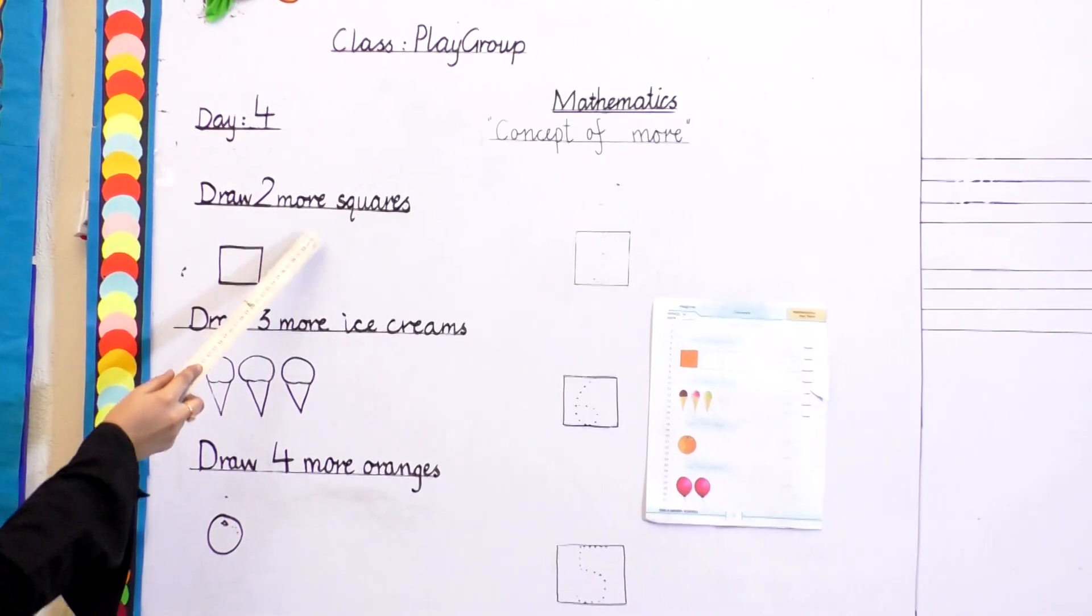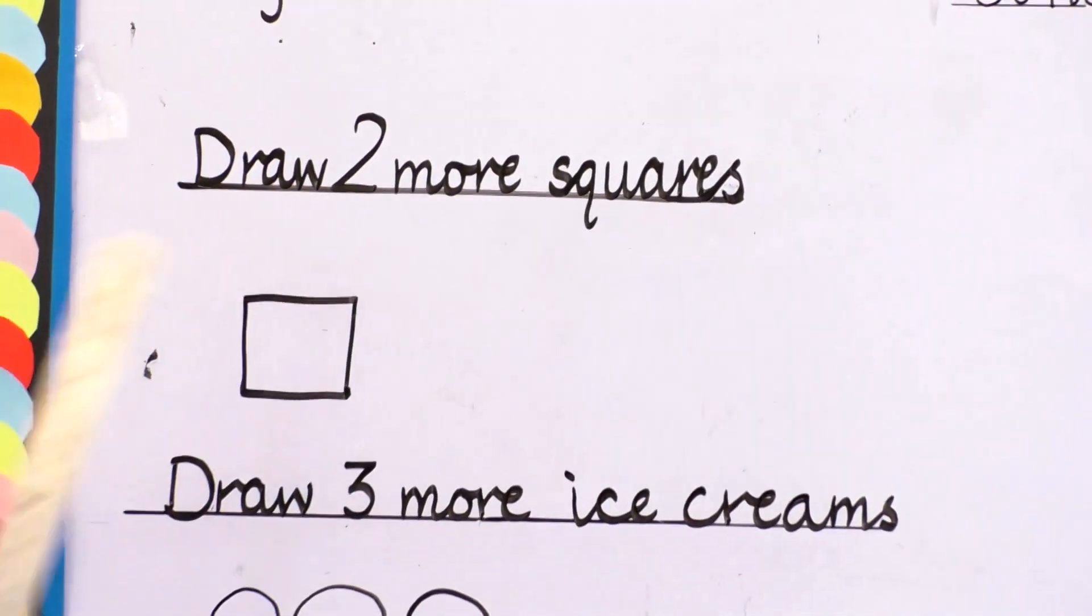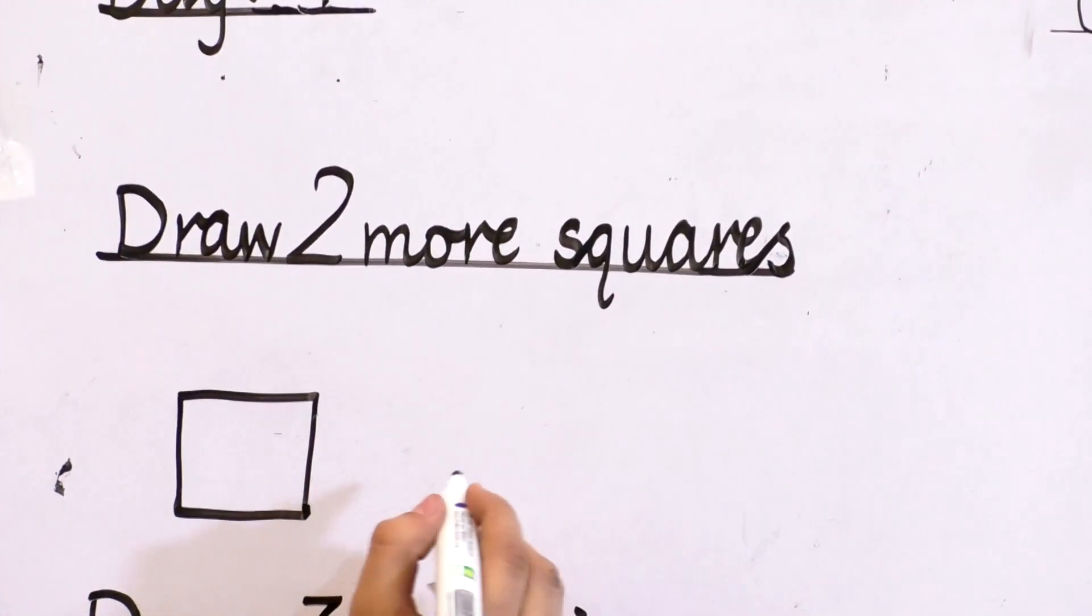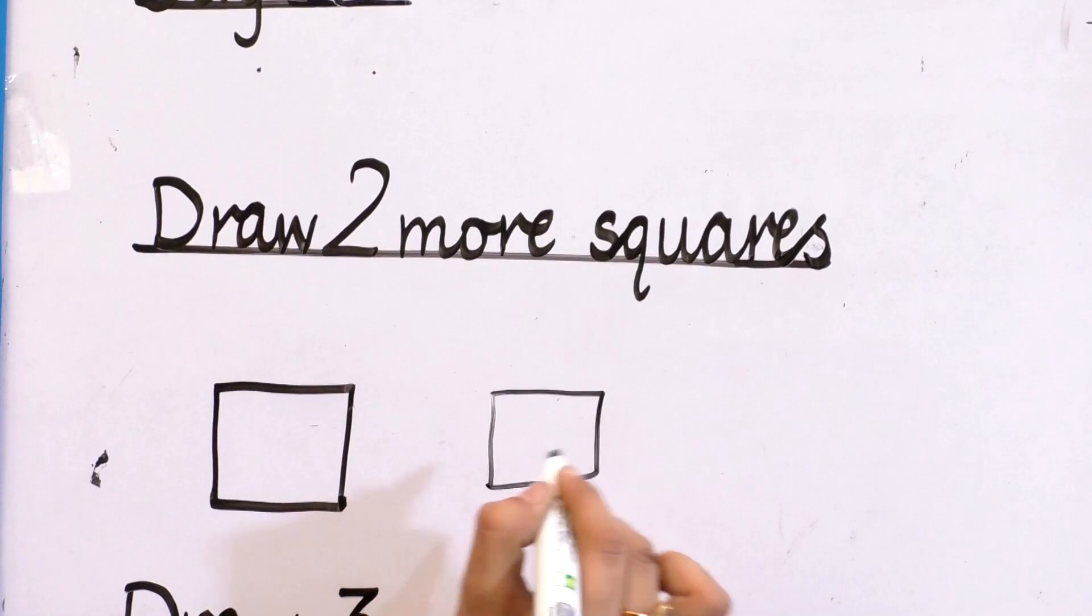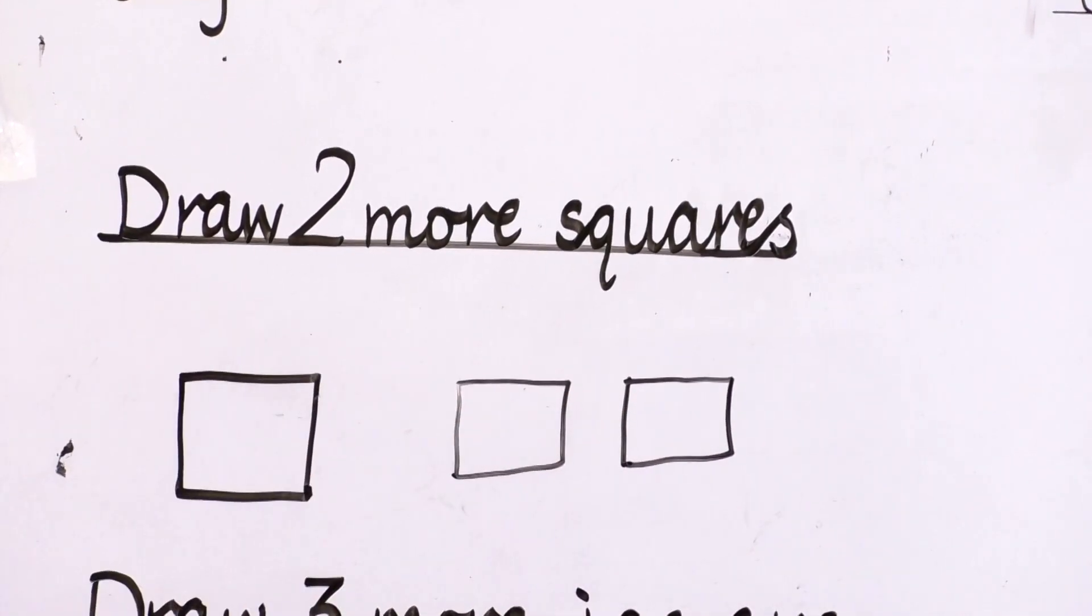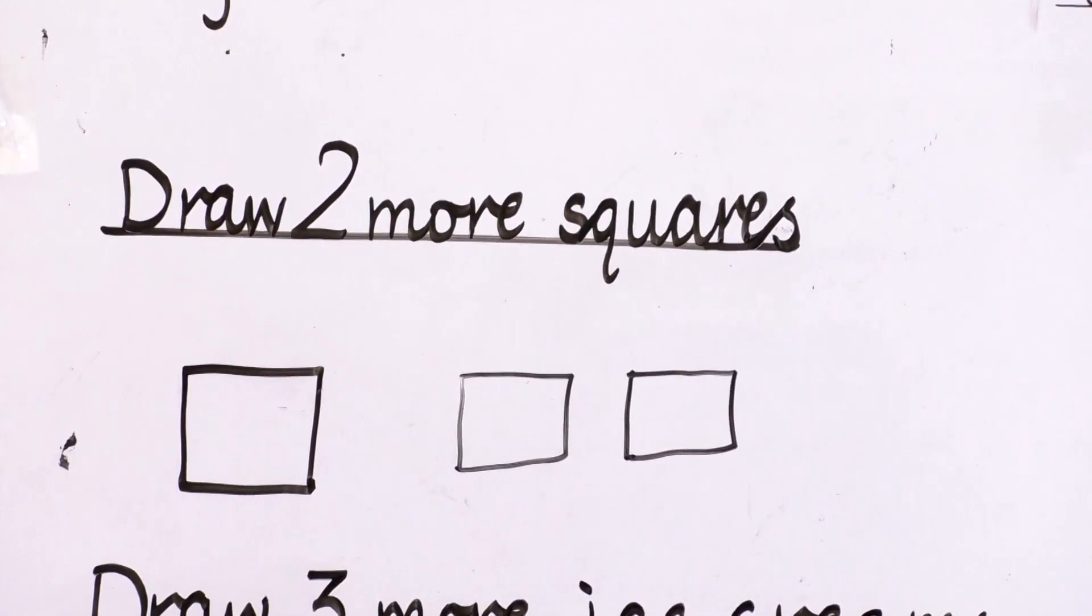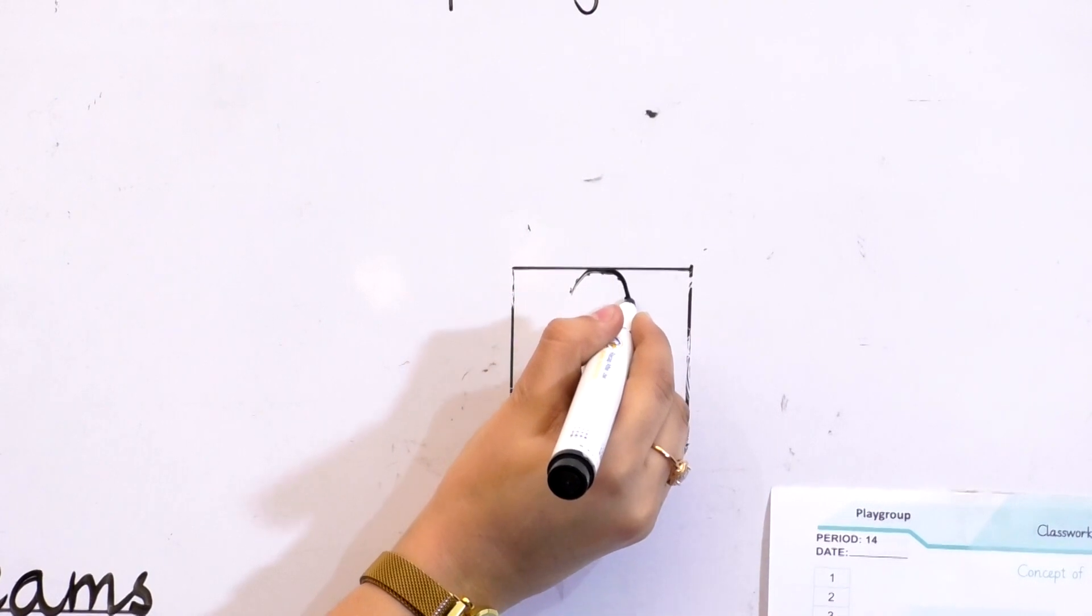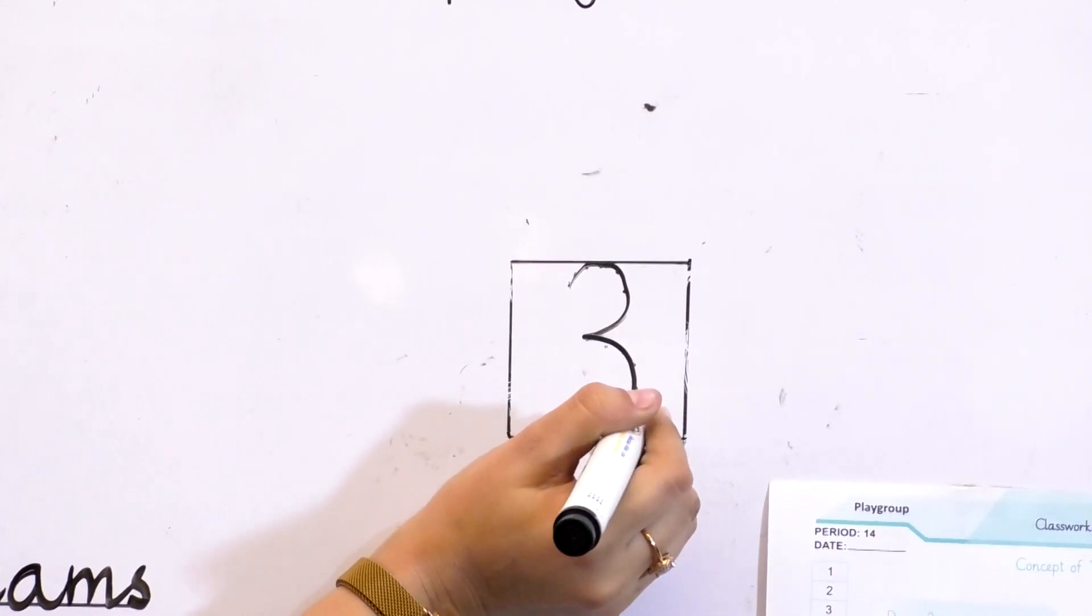First of all, draw two more squares here. I am having just one square here, so we have to add two more. Let's start to make two more squares here. One, two. Let's again count how many squares here: one, two, three. Let's try in the box. Start from the line and make half curve and then again curve till the bottom. It's number three.